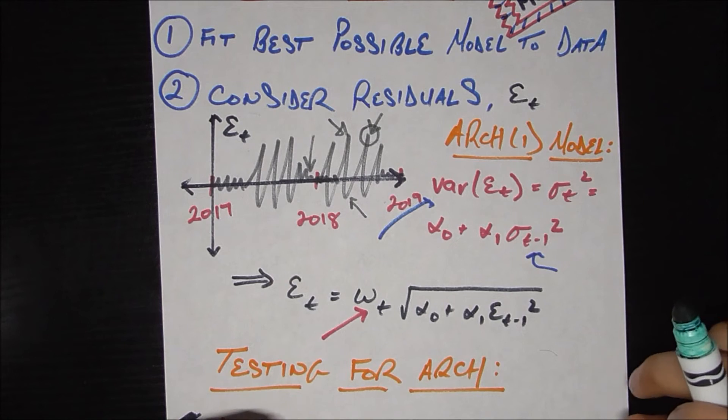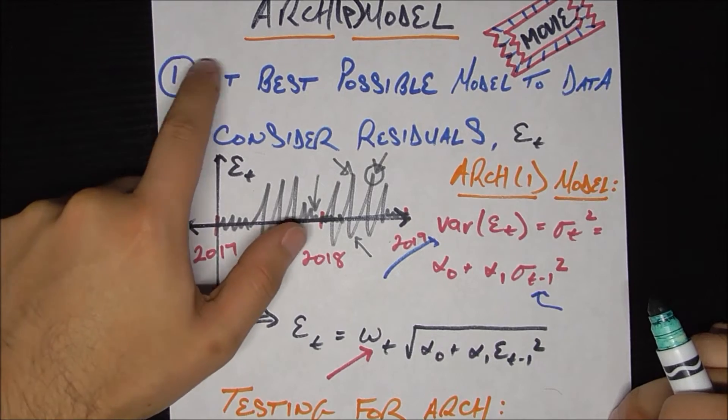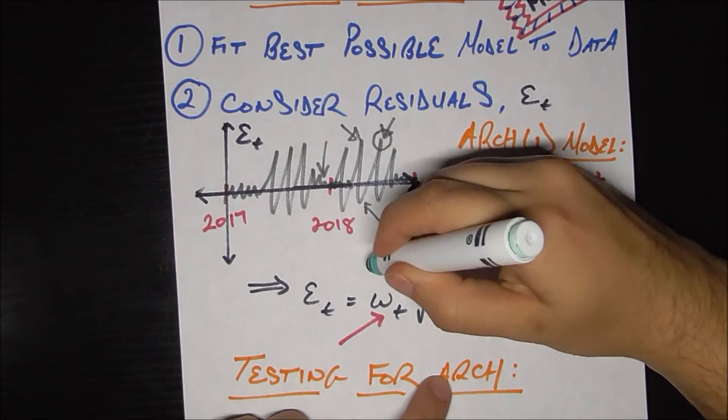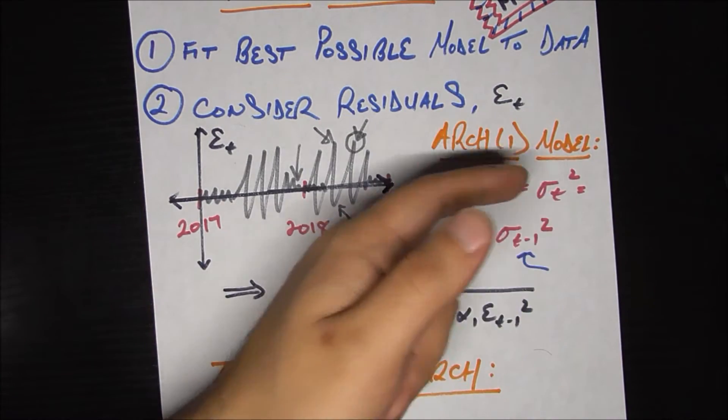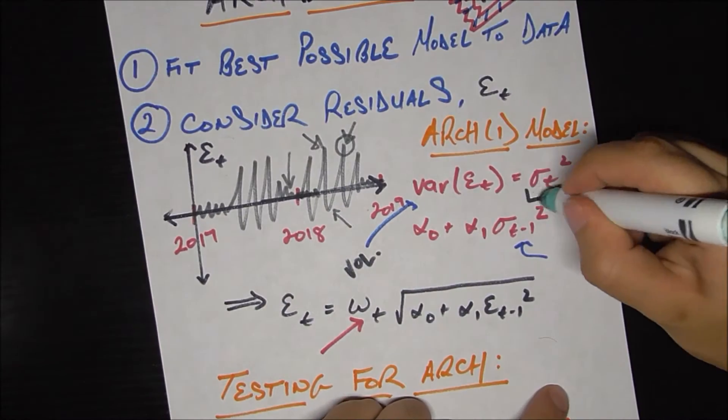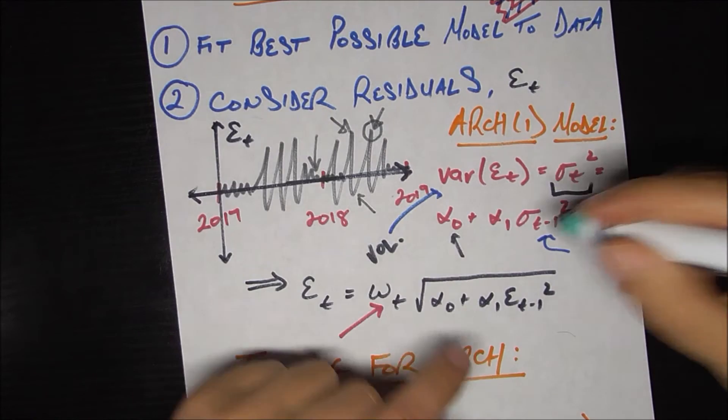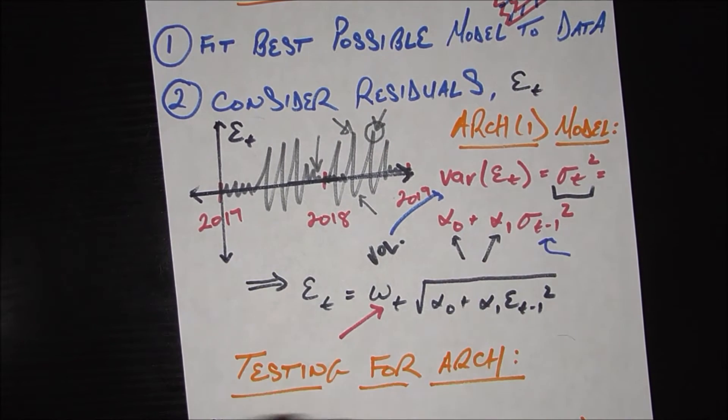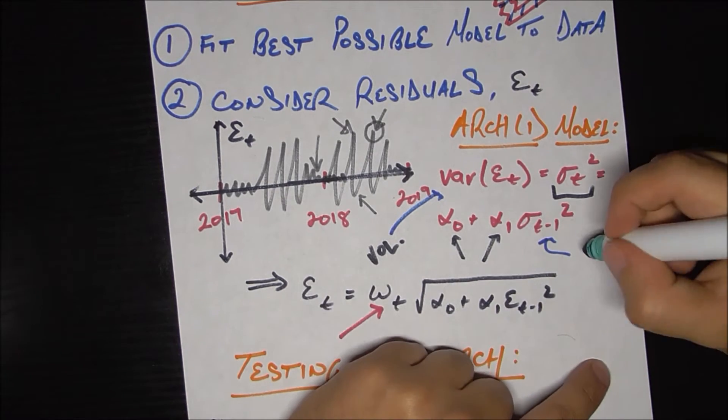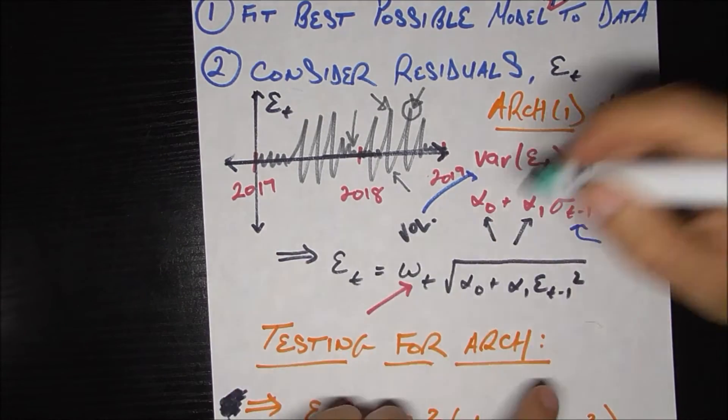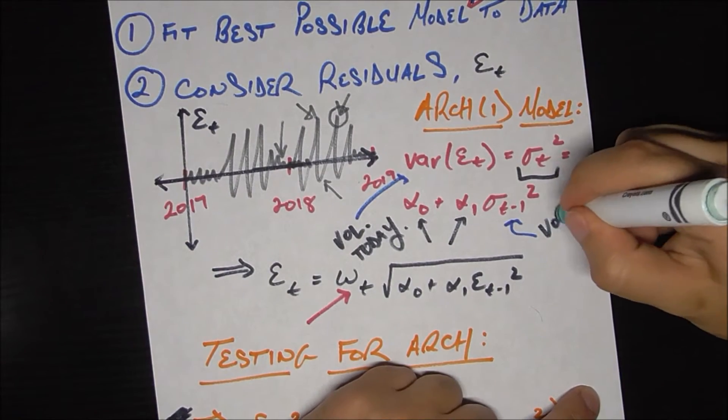So here's the setup for ARCH(1) model. It says that the variance of epsilon sub t, which is your error after you did the best possible model, so it says the variance of your error or volatility of your error is going to be, we're going to call that sigma sub t squared, okay, just as shorthand. We're going to say that sigma sub t squared is equal to some constant, that's just a constant, plus another constant, alpha 1, times sigma sub t minus 1 squared, which is just your volatility yesterday. So if sigma sub t squared is your volatility today, sigma sub t minus 1 squared is your volatility yesterday.